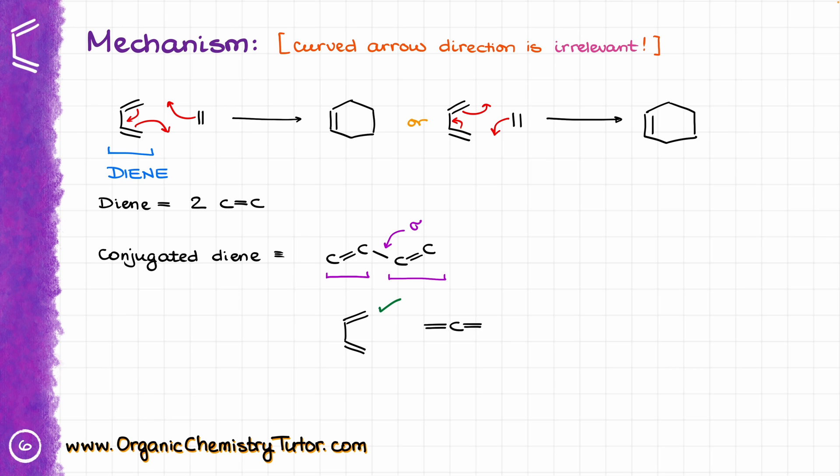However, if we have something like an allene, where both double bonds are sitting on the same carbon, or the molecule where the double bonds are separated by sp3 hybridized atoms, like in this case I have sp3 hybridized atoms over here and there, those types of molecules will not work for us. So the accumulated diene like an allene doesn't work, and non-conjugated dienes will not work for us either.